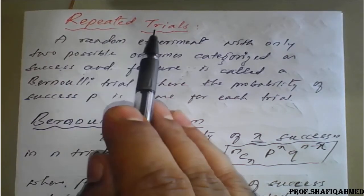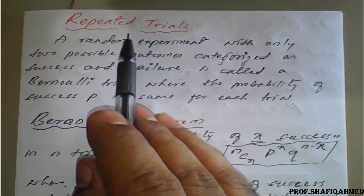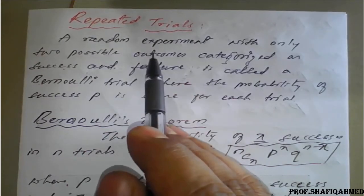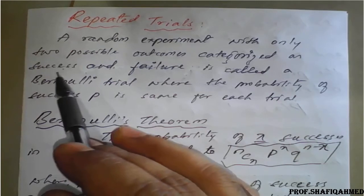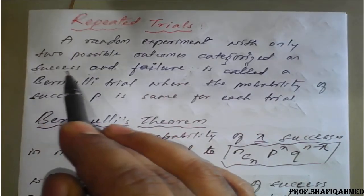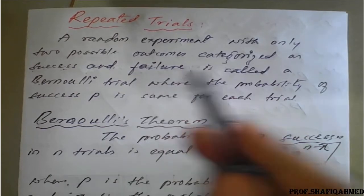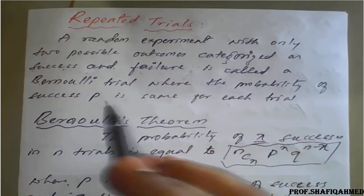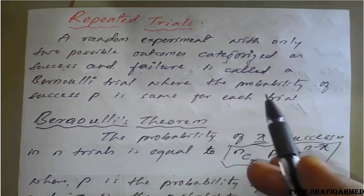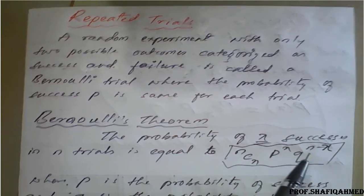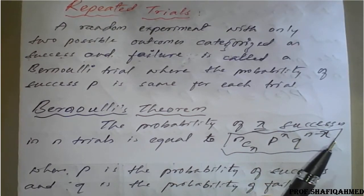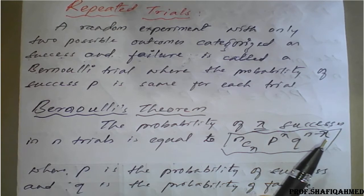We have one more concept called repeated trials. Repeated trials means a random experiment with only two possible outcomes, categorized as success and failure. Failure is called a Bernoulli's trial, where the probability of success P is the same for each trial. Such trials have only two cases — success or failure — and the result for each success will be the same for each trial.